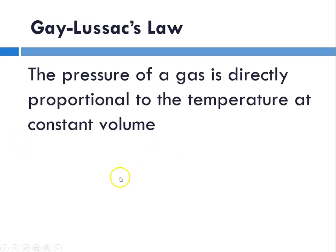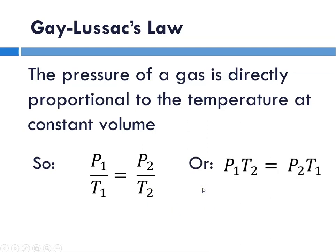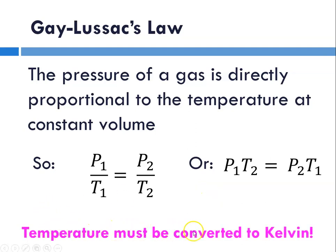So Gay-Lussac's law explains why you shouldn't heat a closed can. The pressure of a gas is directly proportional to the temperature at constant volume. So again here, P1 pressure 1 over T1 temperature 1 is equal to P2 pressure 2 over T2 temperature 2, and we can rearrange that by cross multiplying as P1 T2 equals P2 T1. And again, temperature must be converted to Kelvin or you will be finding yourself solving for a negative value of pressure, and obviously a negative value of pressure would be meaningless.